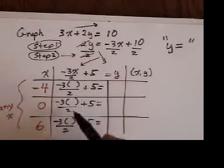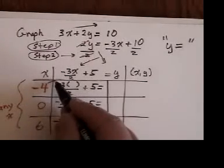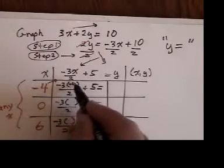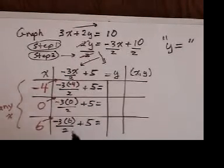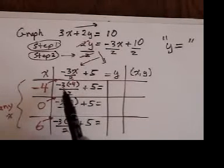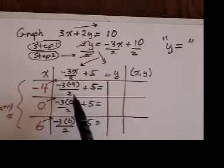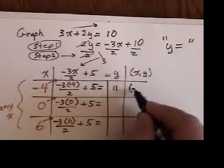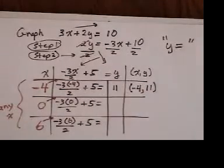Let's make it negative 4, 0, and 6. You're allowed to use any x, so pick numbers that 2 will go into. Since in this fraction, we're going to have to divide by 2. Take these numbers and plop them into the bracket. Now, I do negative 3 times negative 4. That's positive 12. I divide by 2. That's 6. And 6 plus 5 is 11. So there's my first partners for the dance. Negative 4 is going to go to the dance with 11.